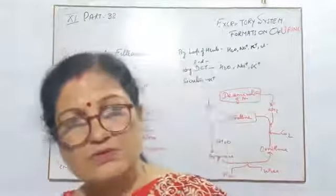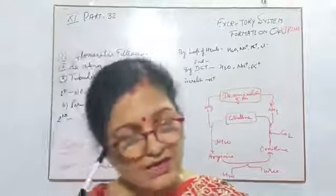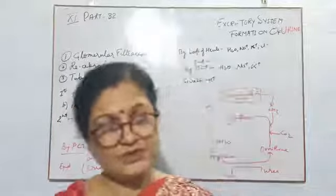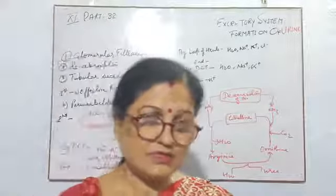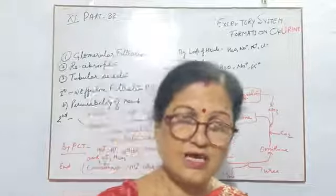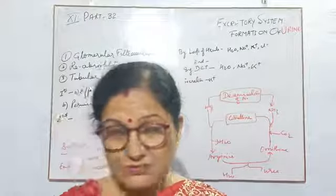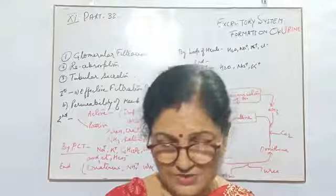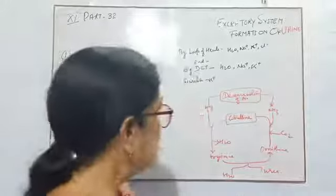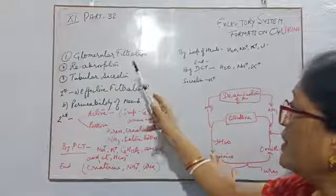As you know, the kidney is made up of nephrons. Each nephron has a glomerulus and Bowman's capsule, and both together form the Malpighian body. Then there is the proximal convoluted tubule, the distal convoluted tubule, and in between there is the loop of Henle. After the DCT there is a collecting duct, which collects the urine and sends it to the pelvis, then through the ureter to the urinary bladder.